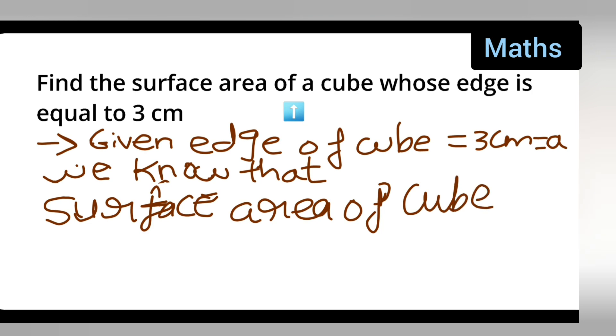What is the surface area of the cube formula? 6a square. So you all can write down: is equal to 6a².